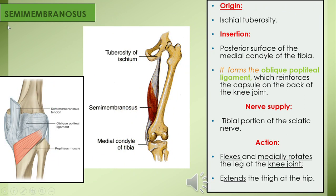The second medial hamstring, lying deep to semitendinosus, is semimembranosus. Its origin is like a broad expanded membrane, which is why it is named semimembranosus. It originates from the ischial tuberosity. Its insertion has specific points: mainly on the posterior aspect of the medial condyle of the tibia; some fibers are reflected and inserted on the popliteal fissure; and further fibers are reflected to insert on the posterior capsule of the knee joint, where they are called the oblique popliteal ligament.